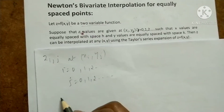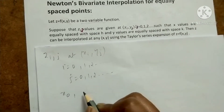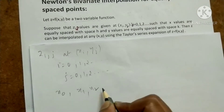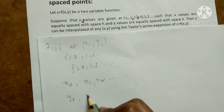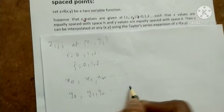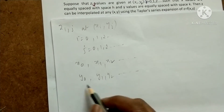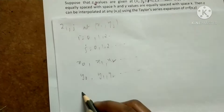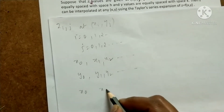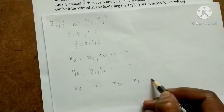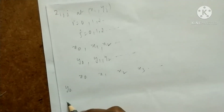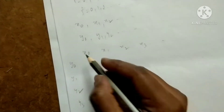That means we will have x values as x_0, x_1, x_2 and so on, and y values as y_0, y_1, y_2 and so on. We place x values horizontally and y values vertically: y_0, y_1, y_2, y_3 and so on.